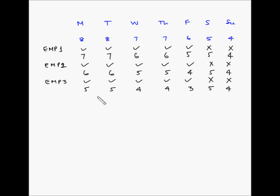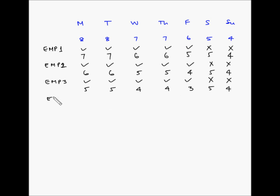Now let's calculate the lowest net requirements. 5+5=10, 5+4=9, 4+4=8, 4+3=7, 3+5=8, 5+4=9, and 4+5=9. The lowest net requirement is for Thursday and Friday, which is 7. So we give employee number 4 Thursday and Friday off. Employee 4 will take Thursday and Friday off and work on the remaining days.